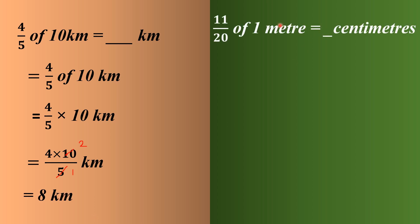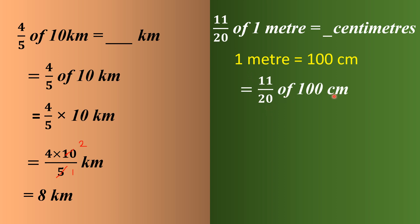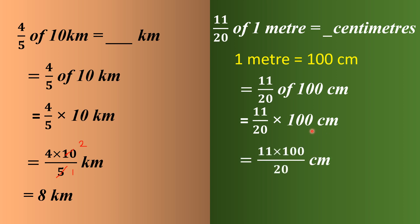Next question: 11/20 of 1 meter equals how many centimeters? We know 1 meter has 100 centimeters, so the question becomes 11/20 of 100 centimeters. Replacing 'of' with multiply: 11/20 multiplied by 100 centimeters. The zeros cancel, and simplifying: 2 ones are 2, 2 fives are 10. The final answer is 55 centimeters.